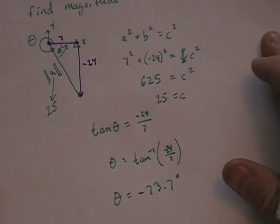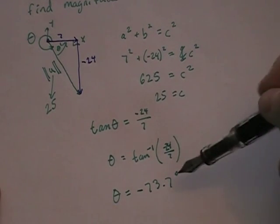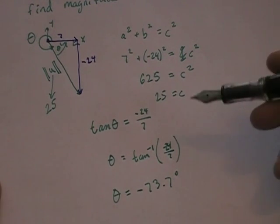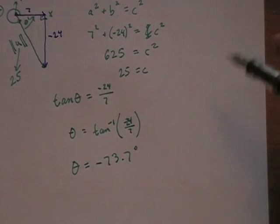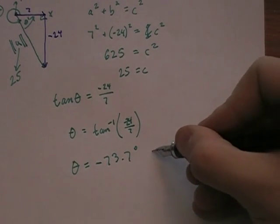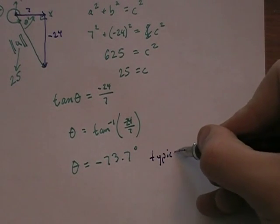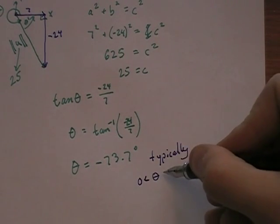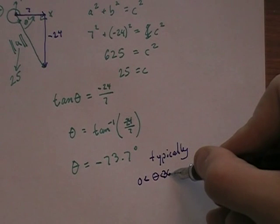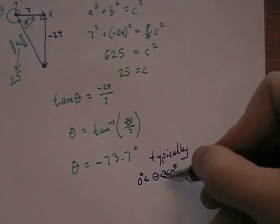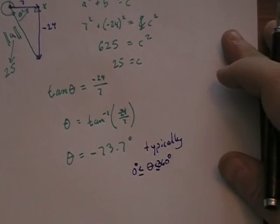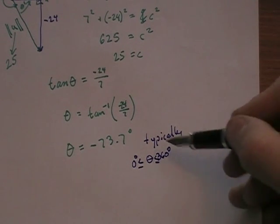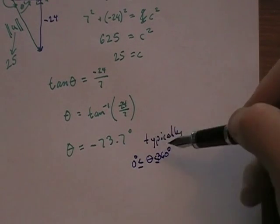Now, typically with direction angle, this is not an acceptable answer. Typically our direction angle needs to be, not always, but typically, typically theta is from 0 to 360 degrees. Somewhere in that realm, 0 to 360. This is outside of that realm.